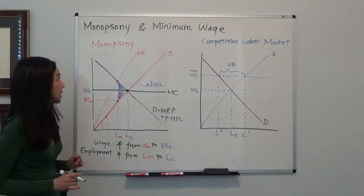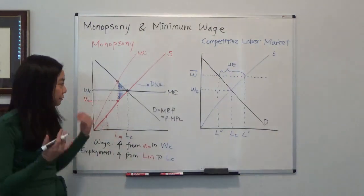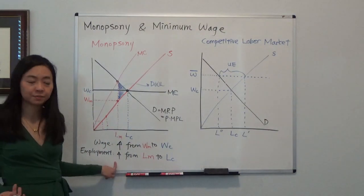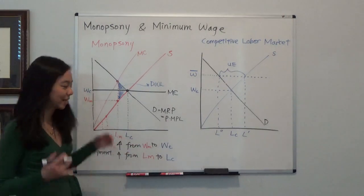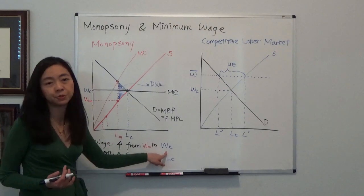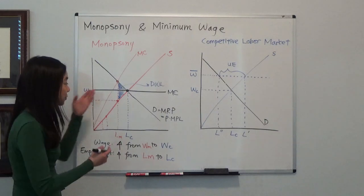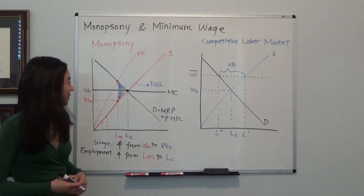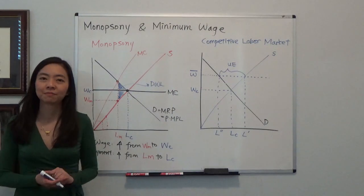So you can see that when you have a monopsony, minimum wage law is actually a good thing. First of all, it increases employment from LM to LC. Second of all, they increase the wage of these workers from WM to WC. These are really unskilled laborers. And also, you take care of the deadweight loss. So they reduce the deadweight loss from this triangle to nothing.